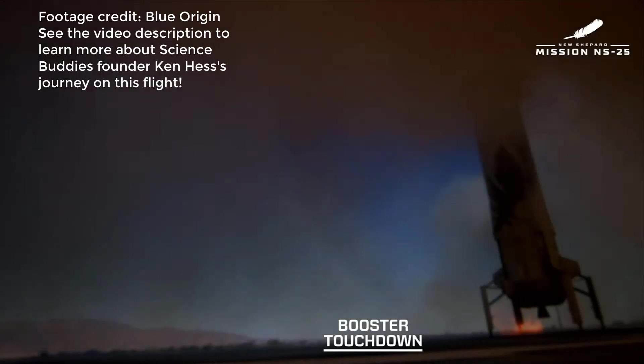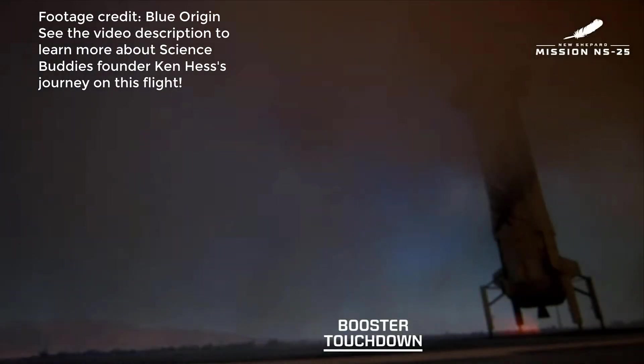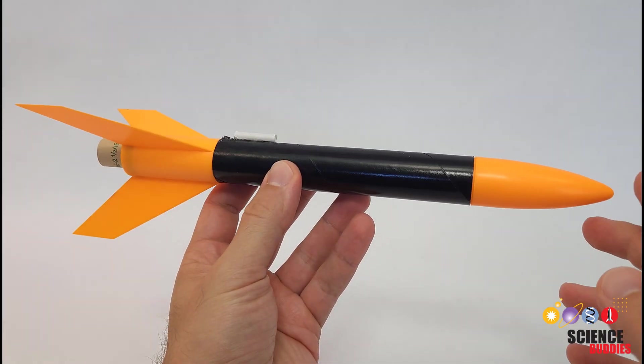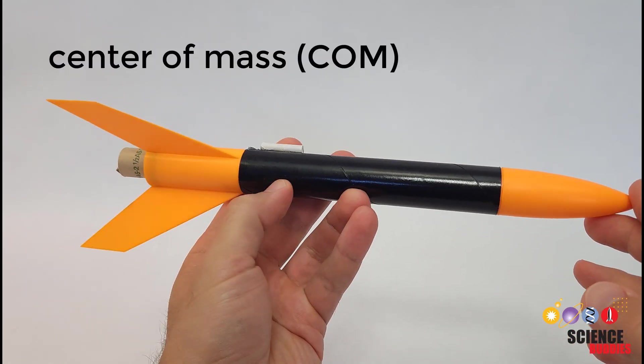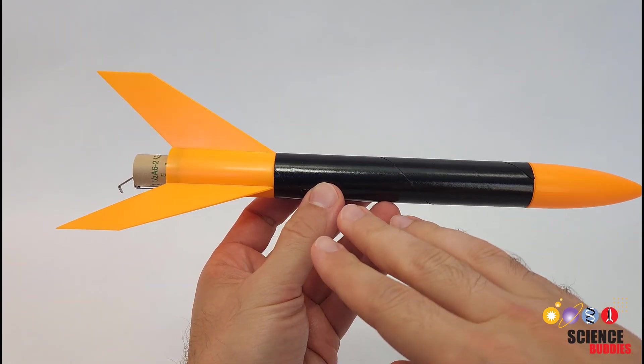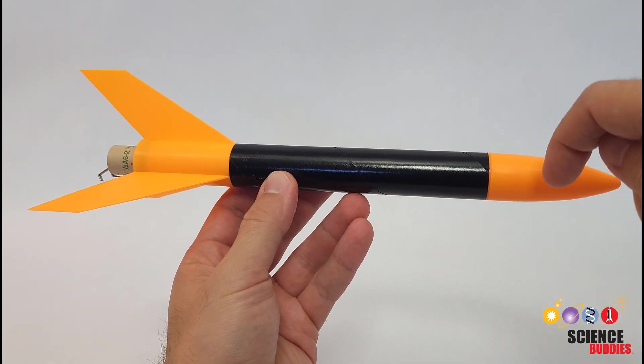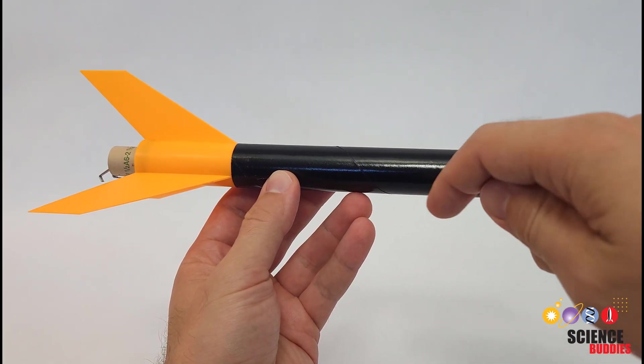To do this, first, you'll need to understand a little bit of rocket science. Let's switch over to looking at a model rocket up close to talk about some of the physics. The first concept you'll need to understand is center of mass. A rocket's mass is distributed throughout the entire rocket, and gravity individually pulls down on each one of these little bits of mass.